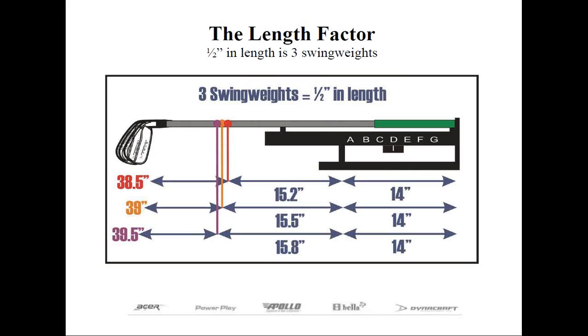This extra half inch adds the same 3 swing weight points as when we shorten the club. So it really doesn't matter if it's a steel shaft or graphite, or if the club is a driver, a fairway, a hybrid, an iron, a wedge, or a putter, that half inch equals 3 swing weights in all cases.